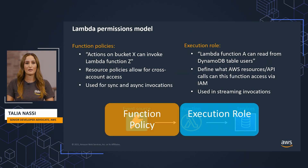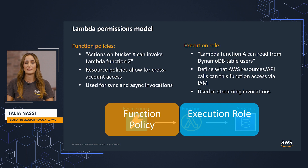A function policy grants permission to access your function. You can use AWS Identity and Access Management, or IAM, to manage access to the function. You manage permissions in a permissions policy that you can apply to IAM users, groups, or roles. To grant permissions to other accounts or AWS services that use your Lambda resources, you use a policy that applies to the resource itself.